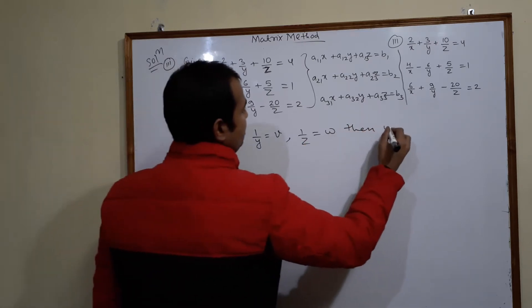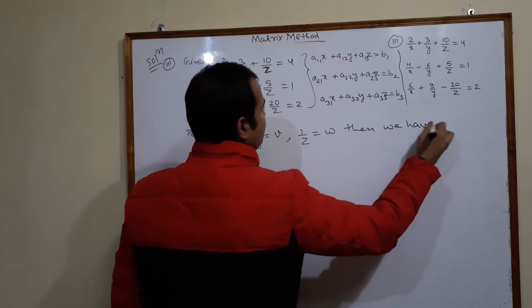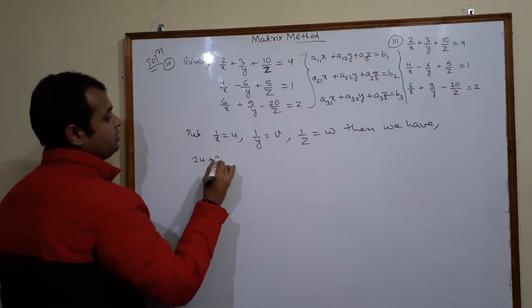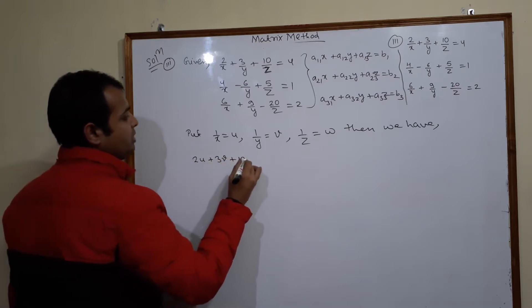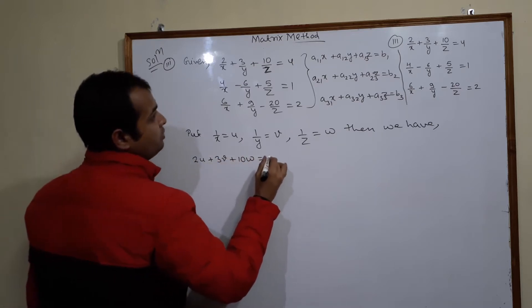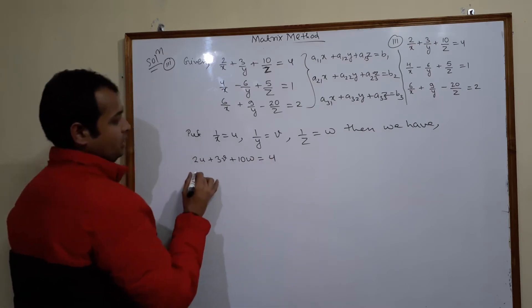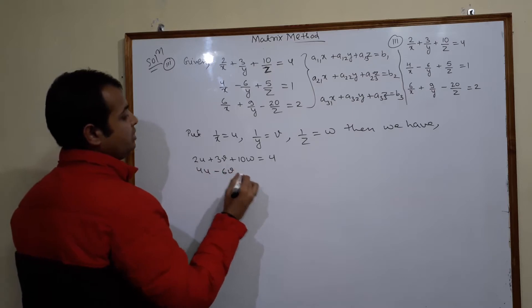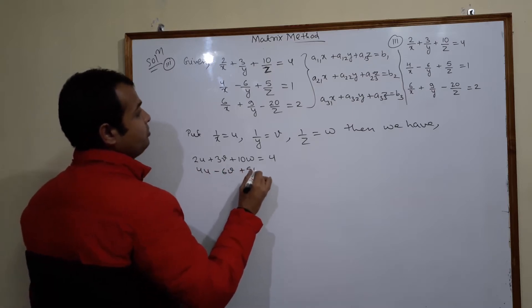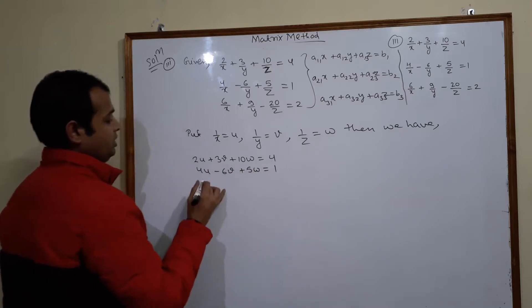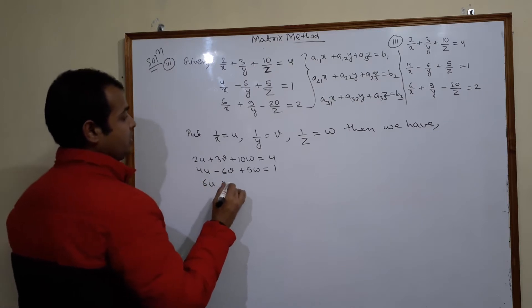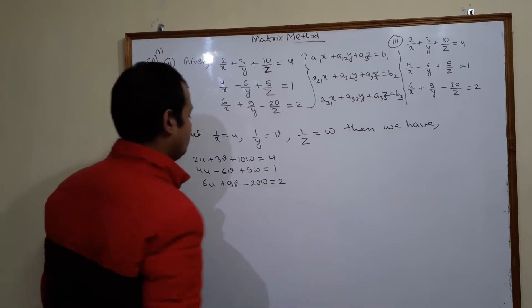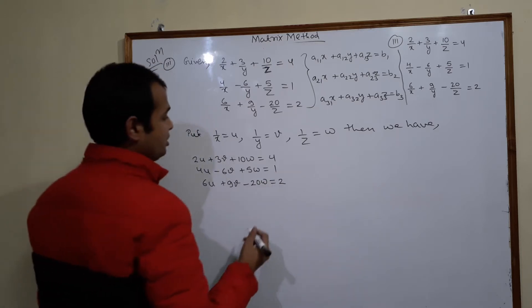Then we have: 2u + 3v + 10w = 4, then 4u - 6v + 5w = 1, and 6u + 9v - 20w = 2. So we have got the transformed system.